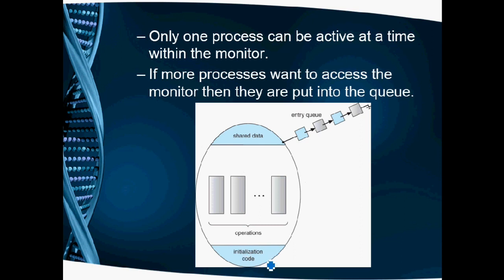The important point is that only one process can be active at a time within the monitor. To access the shared data in the monitor, only one process at a time can access it. If more processes want to access the monitor, like P1, P2, P3, then they are put into a queue. Only one process is allowed to access the monitor at a time.